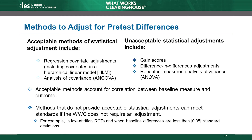Unacceptable statistical adjustments include gain scores, difference-in-differences adjustments, and repeated measures analysis of variance, ANOVA. These methods do not provide acceptable adjustments for the WWC. They raise a concern because they assume a fixed relationship between the pre-test and the post-test. When deciding whether a statistical adjustment is acceptable, the WWC requires that the authors estimate the relationship from the data rather than assuming or imposing it based on the analytic approach.